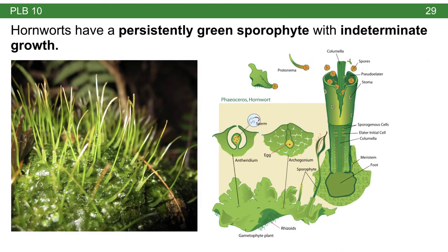When you compare liverworts to hornworts, there are some similarities, but hornworts really stand out in the structure of their sporophyte and the appearance of their gametophyte tissue. Hornworts tend to look sort of glistening, almost like a gummy bear appearance. Oftentimes they even have a blue-green color, which is the result of symbiotic cyanobacteria. The standout feature is the long horn-like extension — that is the sporophyte. The sperm perhaps have an easier time here because they just have to swim through water on the surface of the hornwort body.